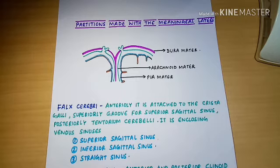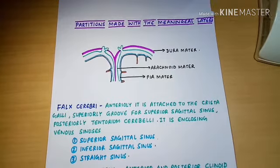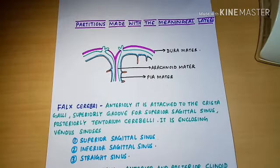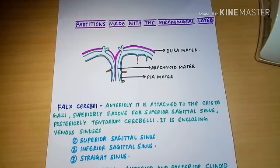The inner layer of the dura expands internally to form a series of five partitions that separate the portions of the brain. On the midline, the inner dural layer separates around the superior sagittal sinus and then unites to form the falx cerebri. In general, there are five types of partitions made with the dural expansion.